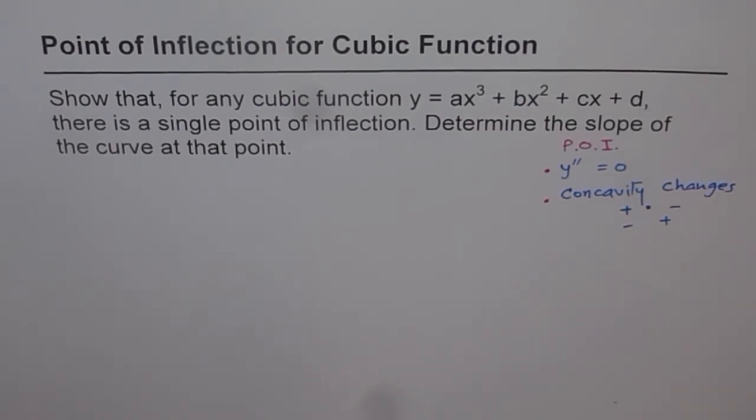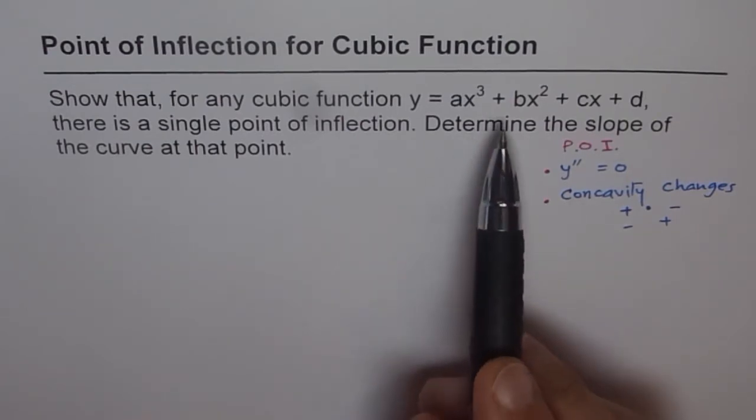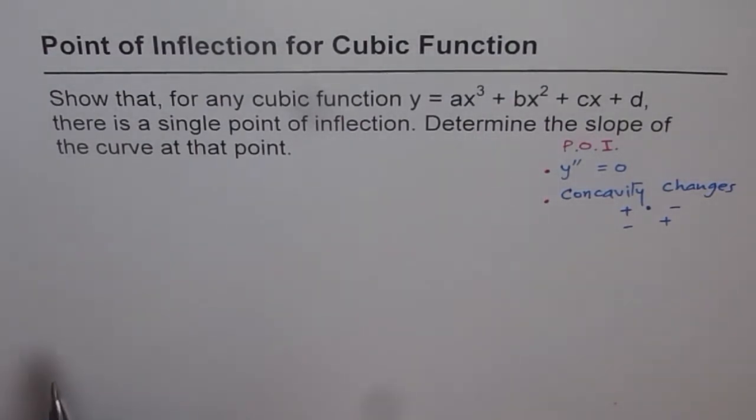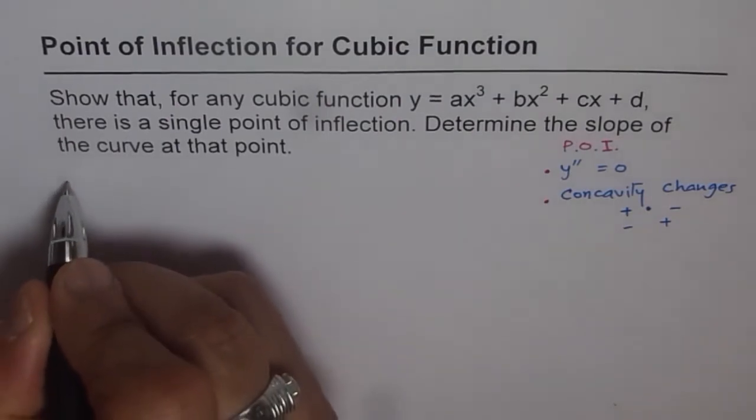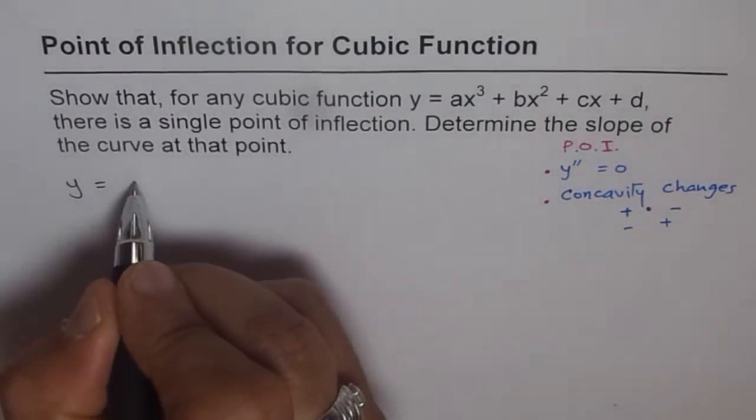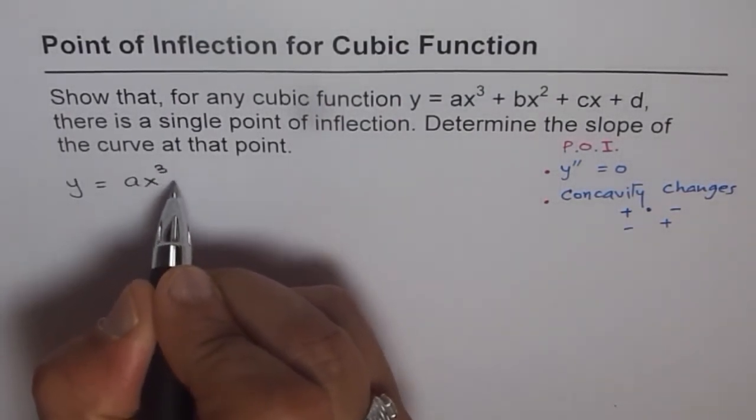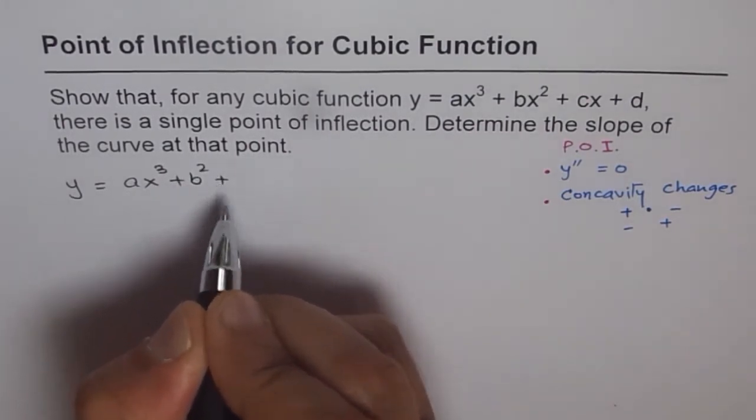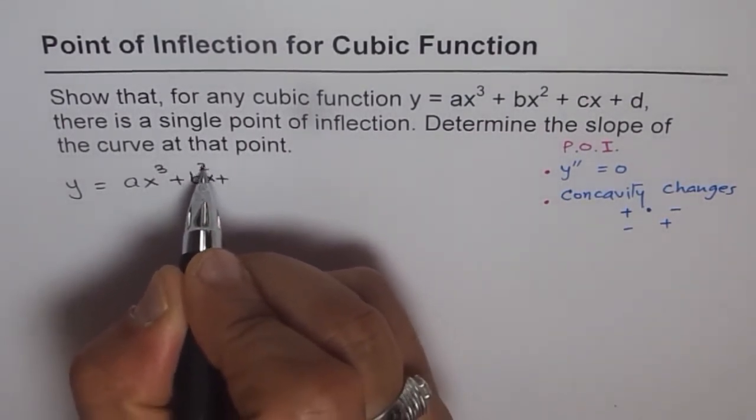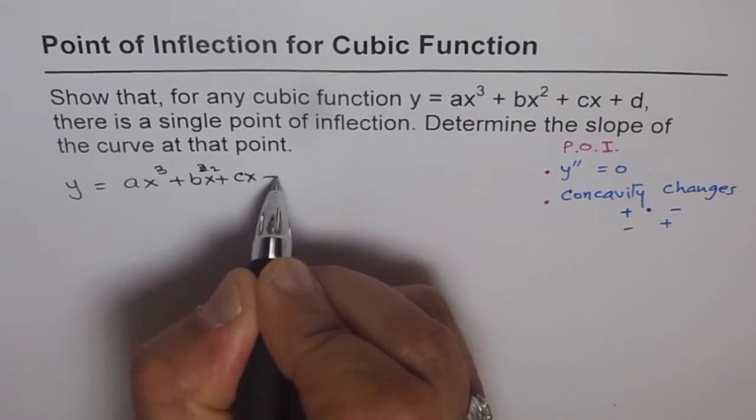Now let's try to solve and see whether it is really true that for any cubic function there is only one point of inflection. So let's write down the function and find its derivative.